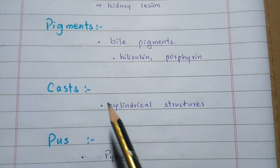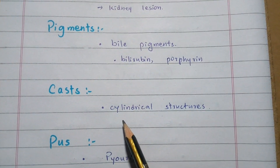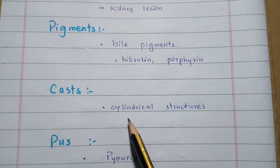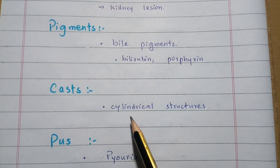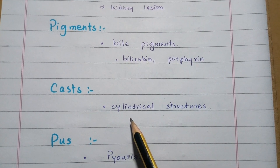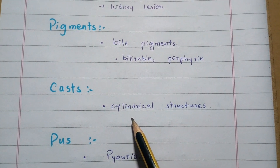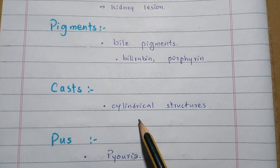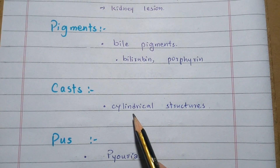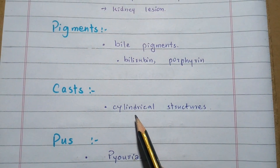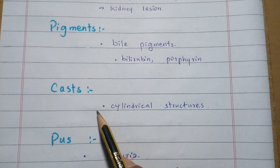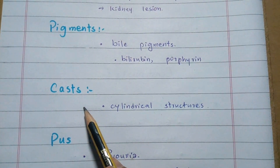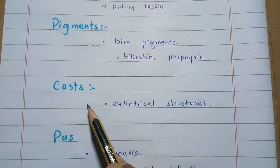Then the casts. Casts are microscopic cylindrical structures produced by the kidney in certain disease states. These casts are also a component of abnormal urine.